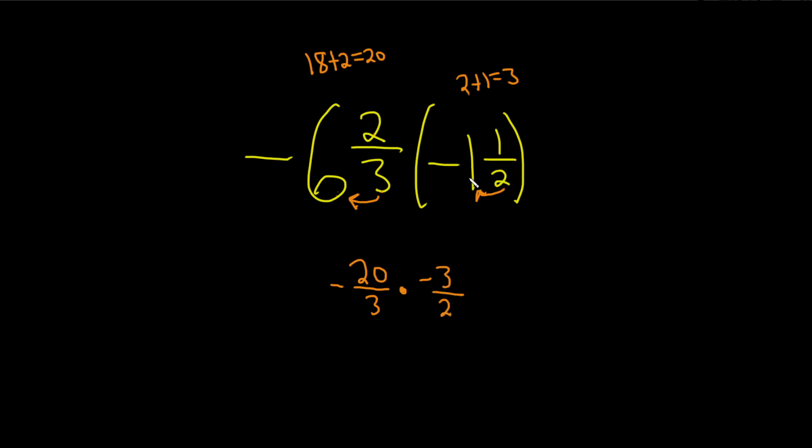Again, 2 times 1 is 2, 2 plus 1 is 3. There it is. Keep the bottom number. Remember, 3 times 6 is 18, 18 plus 2 is 20. There it is. Keep the bottom number.